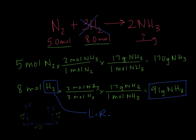With these ingredients — five moles of N2 and eight moles of H2 — we'll never make 170 grams of NH3 because there isn't enough hydrogen. N2 is our excess reagent.